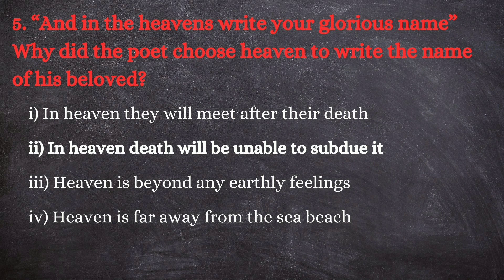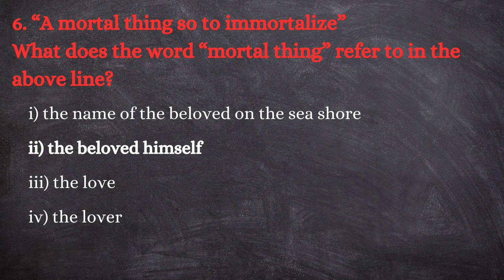In heaven, death will be unable to subdue it. When they are in heaven they are beyond death, and death doesn't have the power to take away everything in that heavenly world. That is why the lover has chosen heaven to write the name of his beloved. Next question: 'A mortal thing so to immortalize' — what does the word 'mortal thing' refer to in the above line?